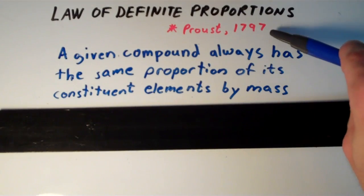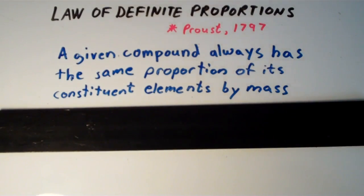In 1797, this was actually less than a decade after Antoine Lavoisier came up with the law of conservation of mass. In 1797, a French chemist by the name of Joseph Proust came up with the law of definite proportions.